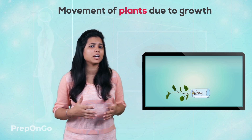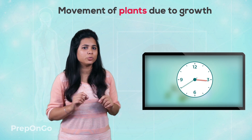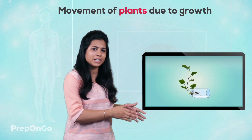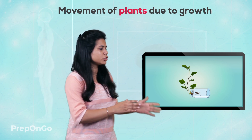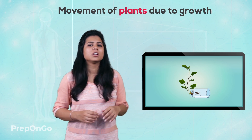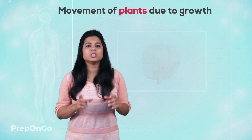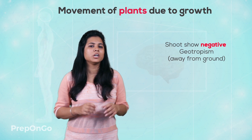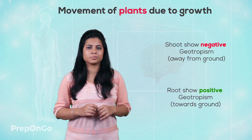Now let's fast forward a few days. After few days you will see that the root is still bending downwards towards the earth and the shoot is rising in the upward direction. So we can conclude that in geotropism, the shoot shows negative geotropism whereas the roots show positive geotropism.